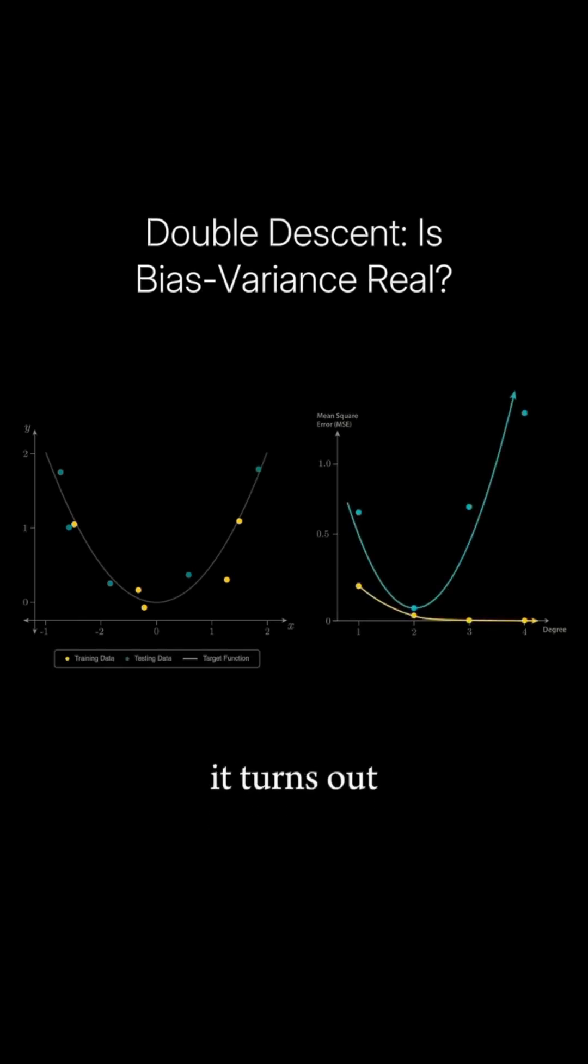Remarkably, it turns out that double descent can also occur with simple polynomial curve fitting. We saw earlier that a second order curve nicely fits our noisy parabolic data,